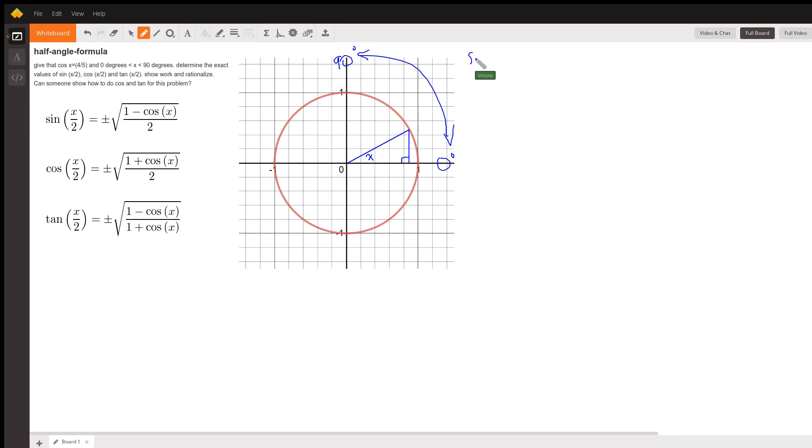And if you remember SOH-CAH-TOA. Because we have a cosine, that means we're using CAH. And that means that the cosine of x is the adjacent, which is this, over the hypotenuse, that's what the A stands for, is adjacent over hypotenuse. So because this thing sits on the unit circle, the hypotenuse is always 1. And so the adjacent here is going to be 4 fifths.